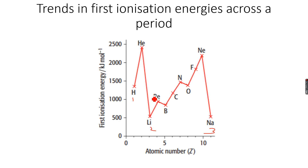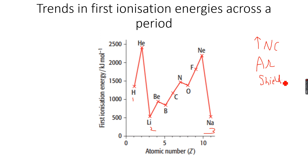This general trend is because as we go across a period, nuclear charge increases. However, atomic radius is relatively constant and shielding is relatively constant. Because the nuclear charge is increasing across the period as the proton number increases, the first ionization energy increases — increased nuclear charge means greater force of attraction, so more energy is needed to remove an electron.